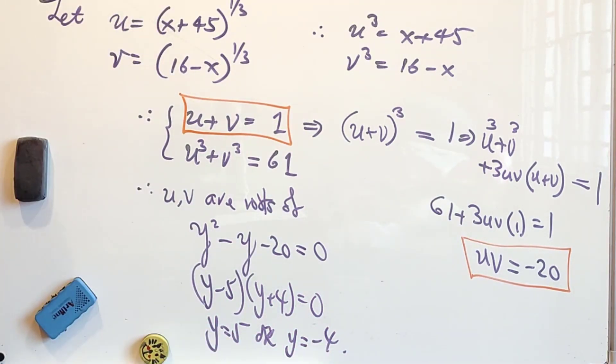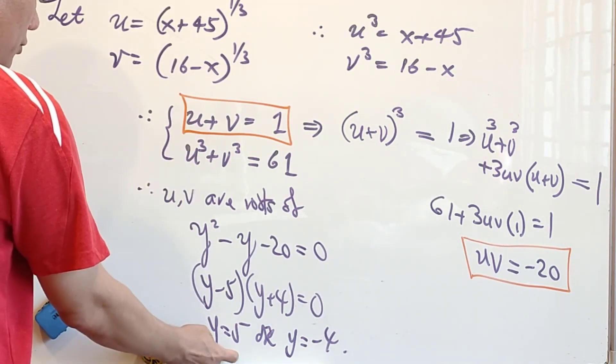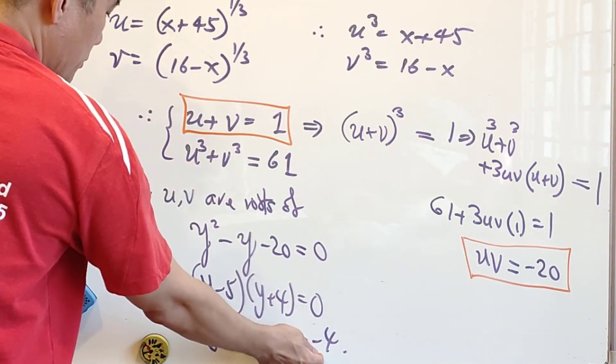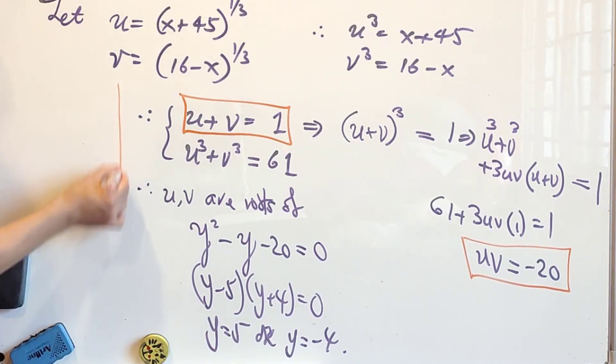So with this, then we know that u can be either equal to 5 or u can be equal to negative 4. So let me continue here.